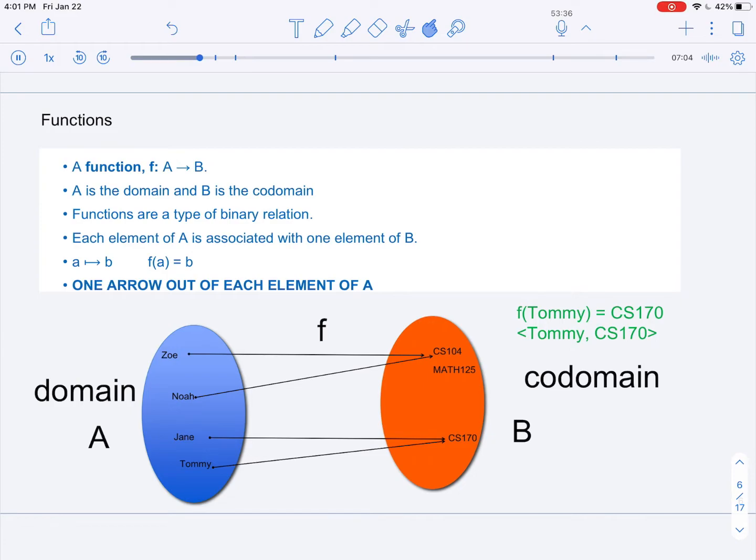In this binary relation, each element in the domain, in this case the set A, is associated with one element in the codomain, one element in B.